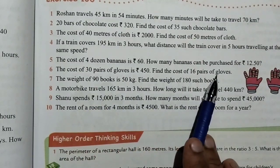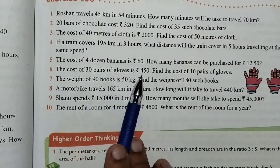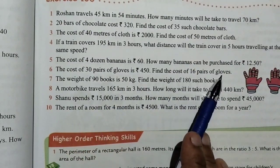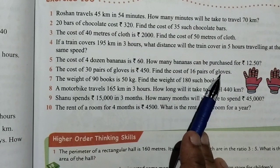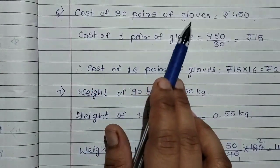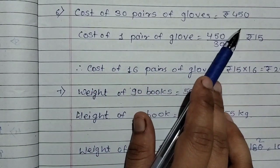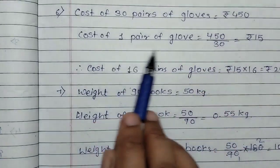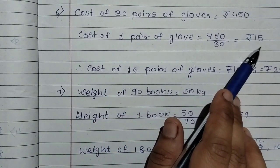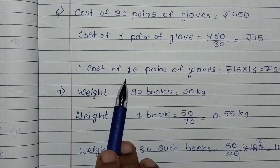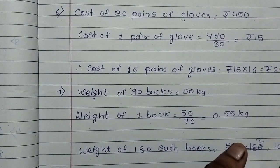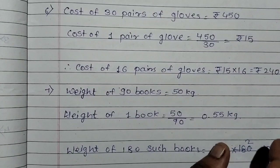Question number 6: The cost of 30 pairs of gloves is Rs.450. Find the cost of 16 pairs of gloves. To find out, first we find the cost of 1 pair: 450 divided by 30 equals Rs.15. Then for 16 pairs, 15 multiplied by 16 gives Rs.240.